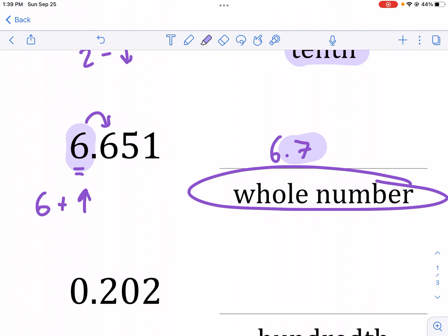So, what do we round up? We round up this whole number. That means we turn it to a seven and that's it. We're done. We don't write 7.0. We don't write 7.1 or 6.7. It's just seven.